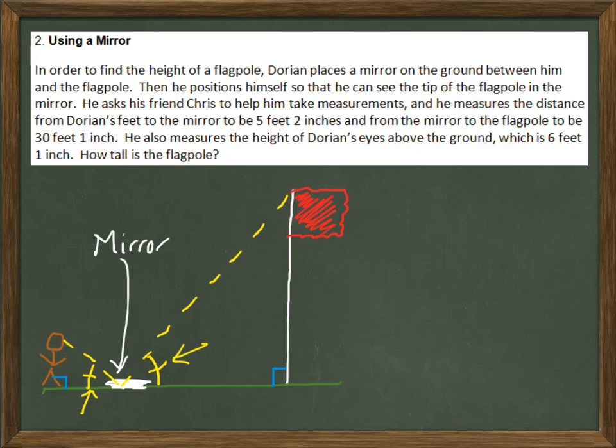We've got congruent triangles again by the angle-angle similarity theorem, because we also have the right angles where the flag touches the ground and where Dorian is standing straight up.